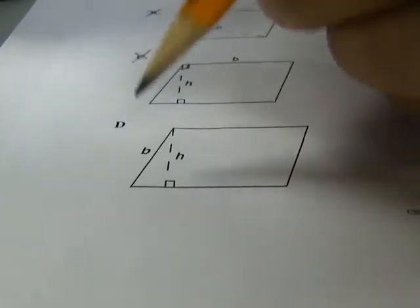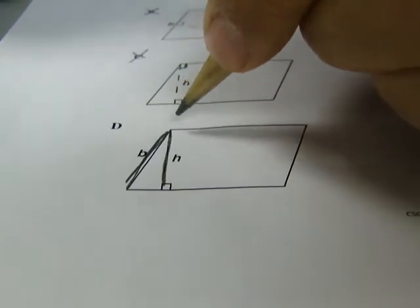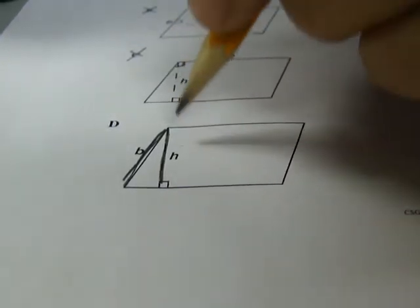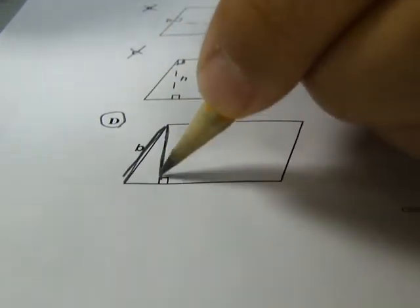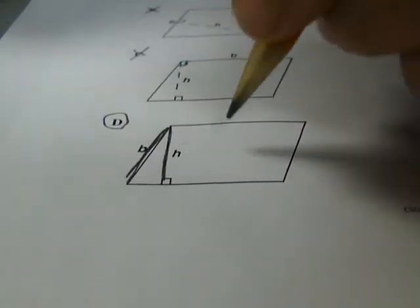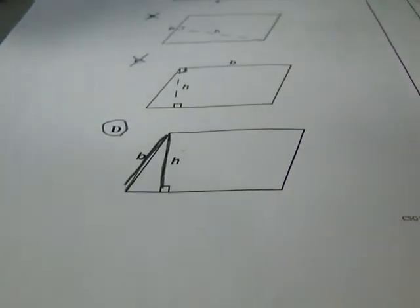D, now D is a little different. Here's the base and here's the height. They are not perpendicular to each other. So this is the one that is the counterexample. If you're calling this the base and this is the height, then that is not going to get you a base times height formula for the area of this parallelogram. So D is your counterexample.